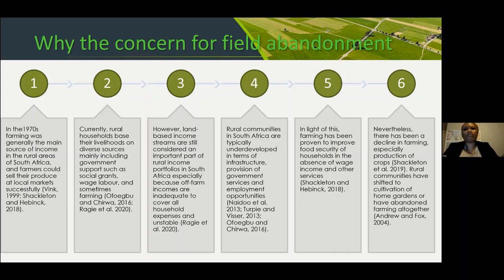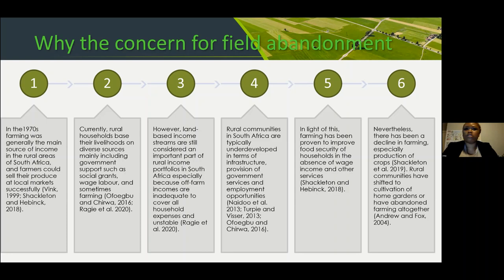Children's social grants can only be received until age 18, so once the child grows older the household has no income. Land-based income streams are still considered very important in South Africa because off-farm sources of income — wages or salary — are usually inadequate to cover all household expenses, rendering households unstable. Farming can be used as a safety net. Rural communities in South Africa are also typically underdeveloped in terms of infrastructure and government services, so it would be very beneficial if they could produce their own food rather than travelling to towns where roads are poor and costs are higher.